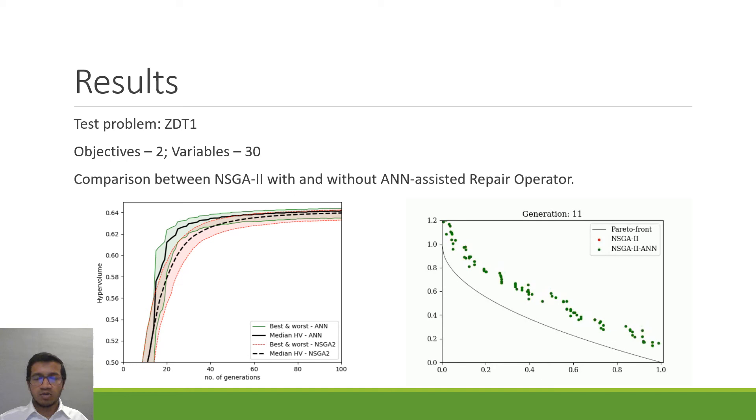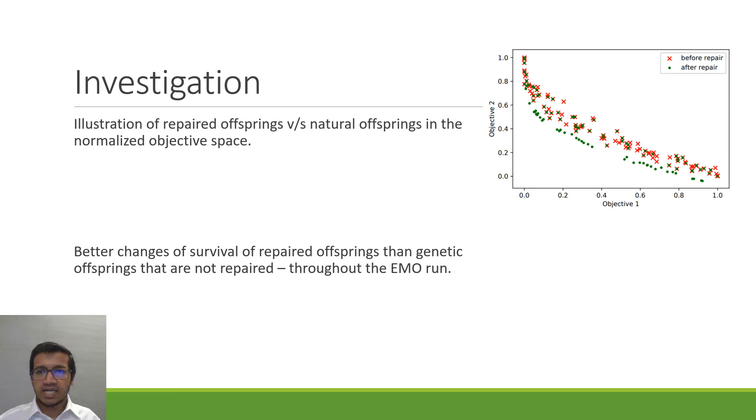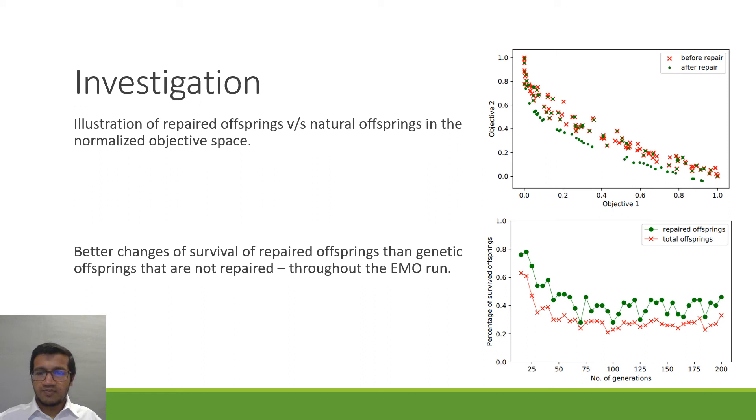So at generation 20 we try to investigate how offspring quality has been enhanced. So we can see here the red crosses show the offsprings before repair but the green crosses show the green dots show the offsprings which are after 50 percent improvement.